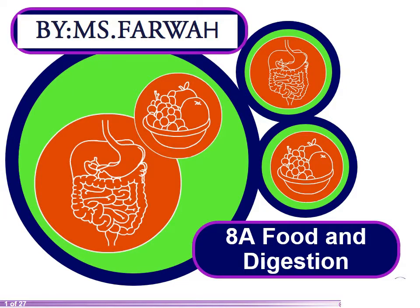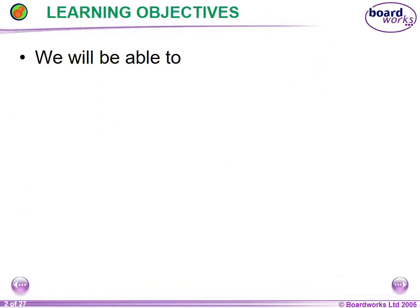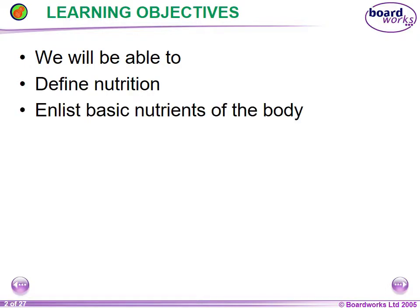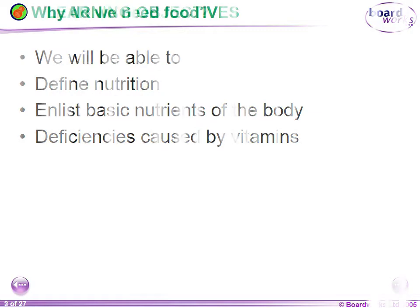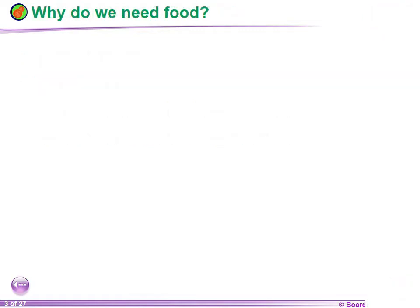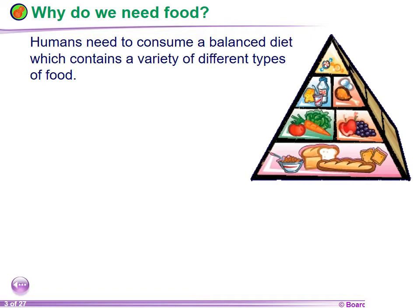Today we will start another lesson of our chapter, which is food and digestion. The learning objectives of today's lesson are: we will be able to define nutrition, list basic nutrients of the body, and understand deficiencies caused by vitamins.